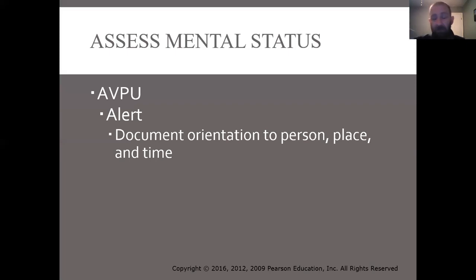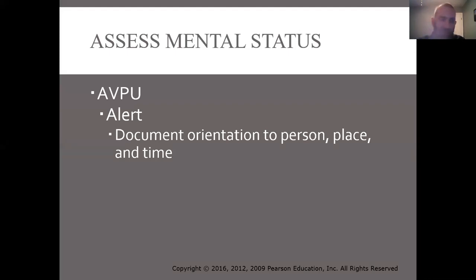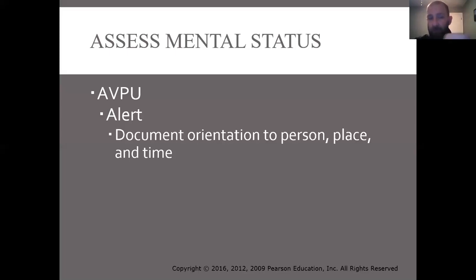You can be alert but disoriented. Maybe you come into a diabetic's house and they're alert — they'll answer your questions and look at you — but they're confused about what's going on, not sure what day it is. So you can be alert and oriented times three, or times two, or times one — but you can also be alert and disoriented. Alert is the only category in AVPU where the patient will be conscious. V, P, and U — they are all unconscious. There are actually different levels of unconsciousness.